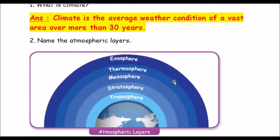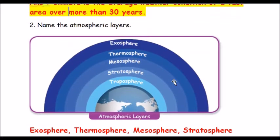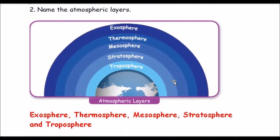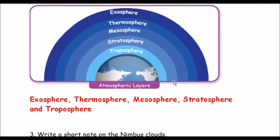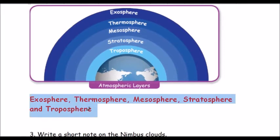Question two: Name the atmospheric layers. The five atmospheric layers are exosphere, thermosphere, mesosphere, stratosphere, and troposphere.